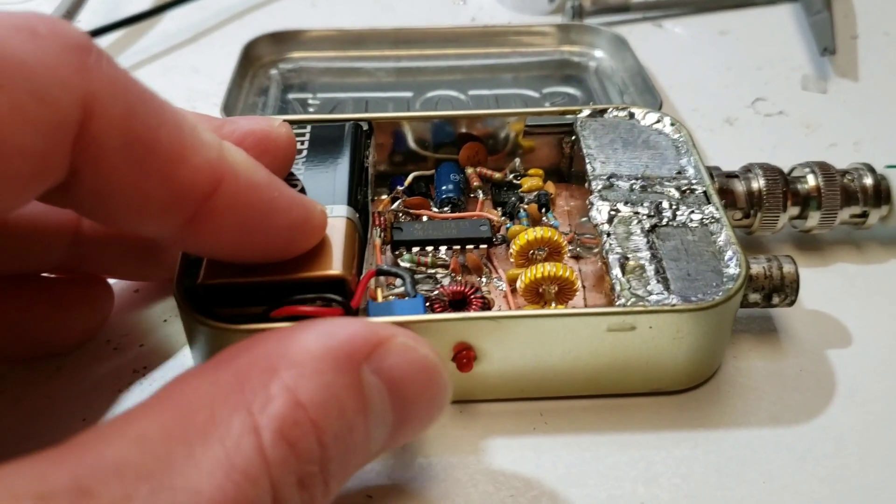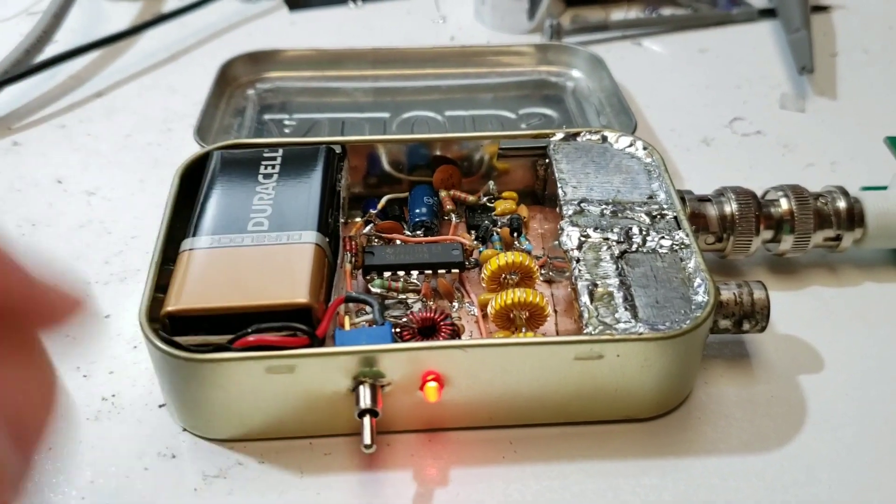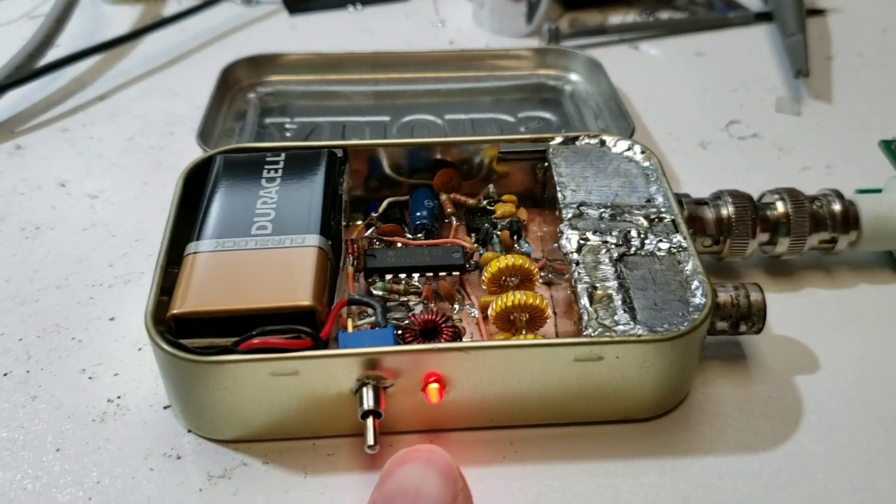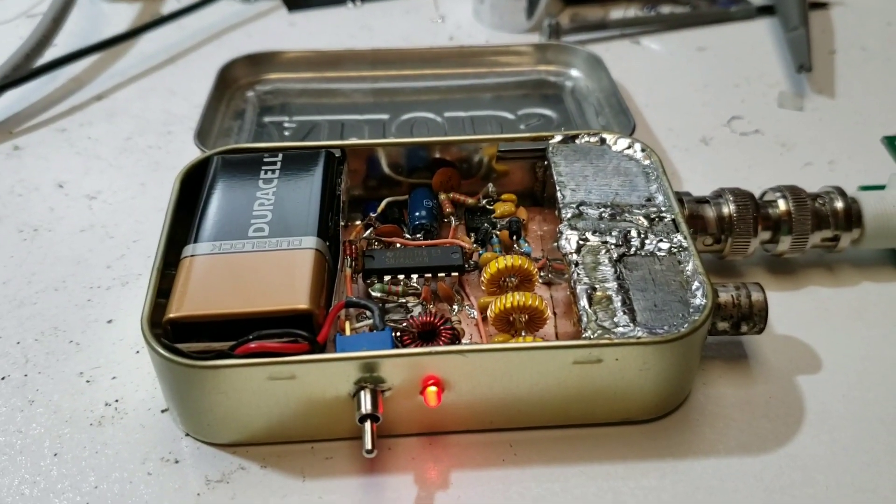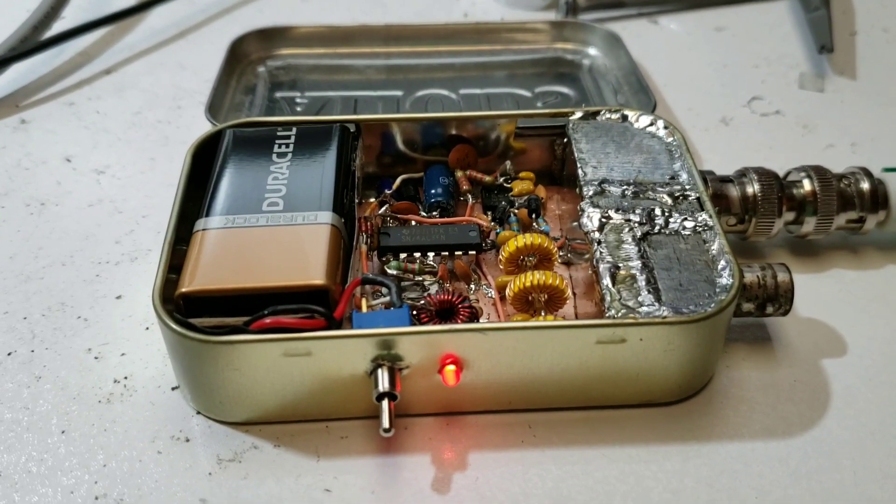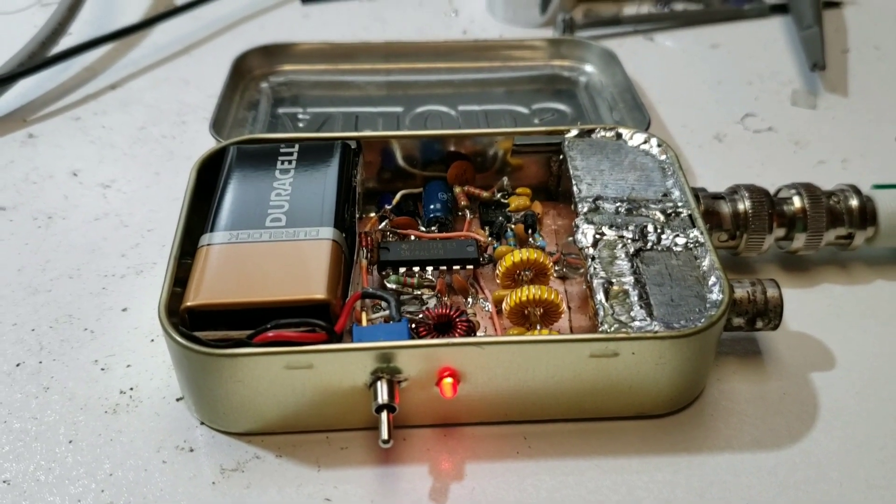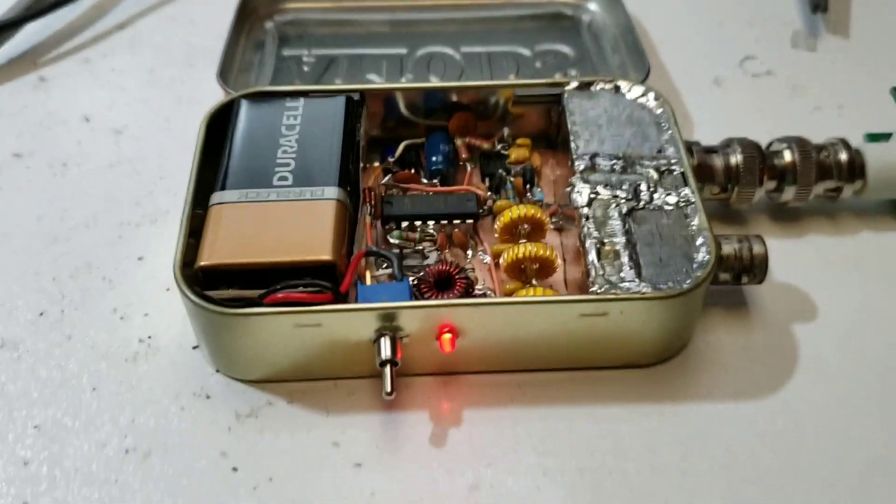You can see here I have a toggle switch to switch it on and an LED to indicate when the power is switched on. As I'll explain later, that LED will actually go out when the battery gets below its useful life.